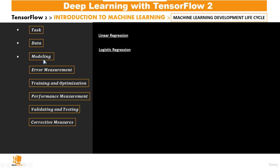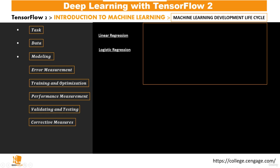Welcome to the section on modeling. Generally, when you have a task, you try to gather some data and then select an appropriate model on which you are going to train your data, so that you could have good results. Depending on your task, you could have models like linear regression, logistic regression, support vector machines, neural networks — just to name a few. In this subsection we shall talk about modeling using linear and logistic regression.